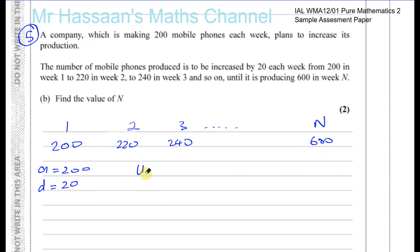We want to find the nth term—which week they'll produce 600 phones in that week, not the sum of the phones but the number of phones. Any term in an arithmetic sequence is given by a + (n-1) times d. So that's a, that's a+d, that's a+2d, a+3d, up to a+(n-1)d.